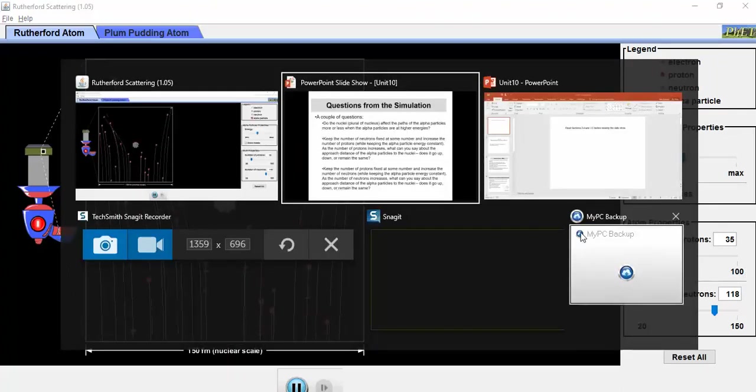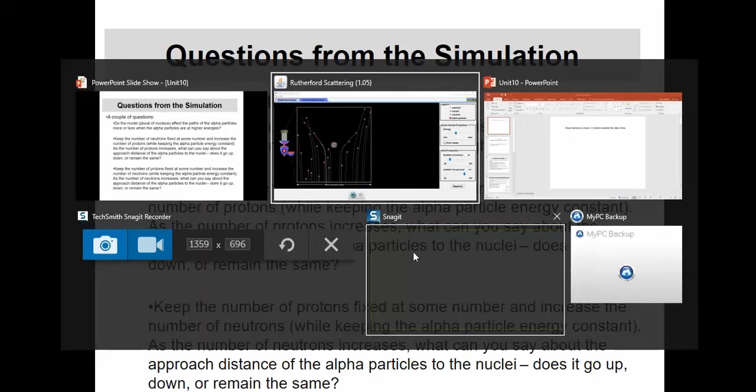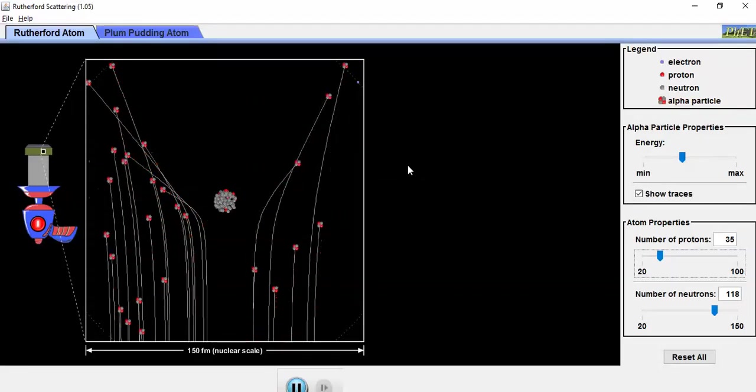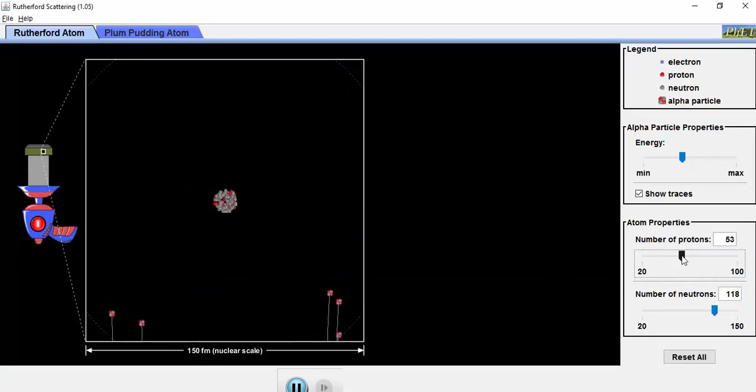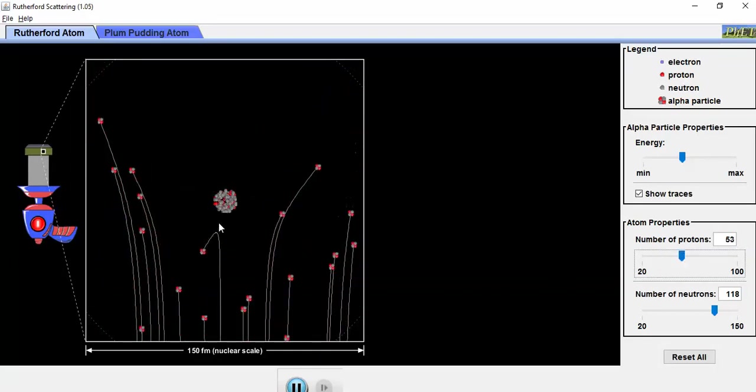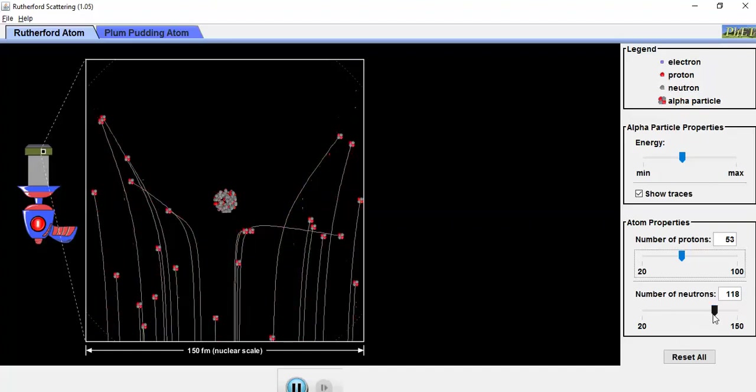Now I'm supposed to keep the protons fixed and increase the number of neutrons, keeping the alpha particles at constant energy. As I increase the number of neutrons, what can you say about the approach distance? Let me put them in the middling range - they get about this close. Let's change the number of neutrons.